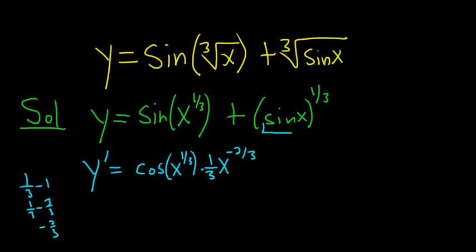Then here, the entire sine function is being raised to the 1 third power. So we bring down the 1 third. We don't touch the inside, so sine x. And then 1 third minus 1, we know that's negative 2 thirds times the derivative of the inside. So the derivative of sine is cosine. Pretty sneaky.